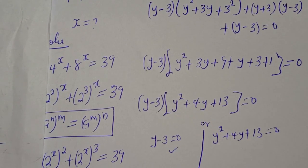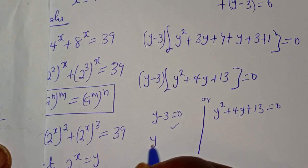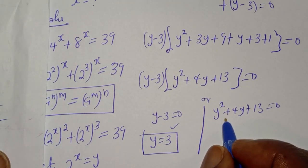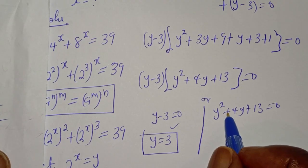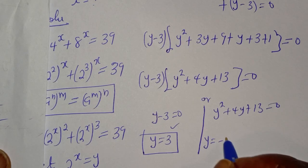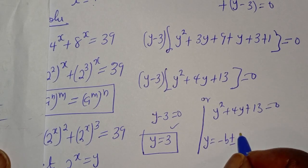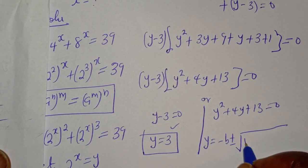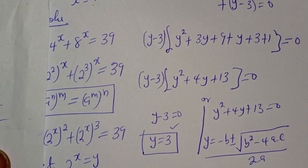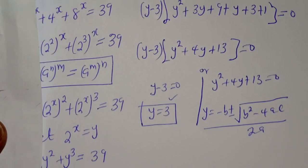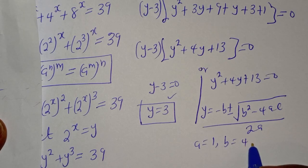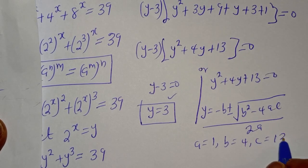From the first case, y is equal to 3. From the second case, y squared plus 4y plus 13 equals 0, which is a quadratic equation. We solve it using the quadratic formula: y equals minus b plus or minus square root of b squared minus 4ac over 2a, where a equals 1, b equals 4, c equals 13.